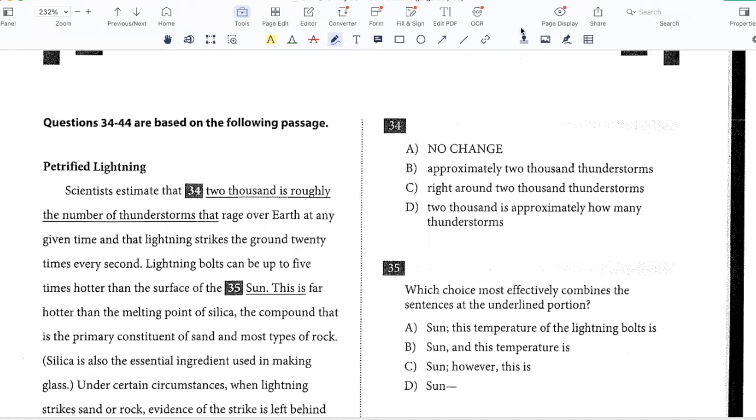Hello students, welcome to the channel. In this video we'll do the fourth and final passage of the May 2017 US SAT's writing section, Petrified Lightning. Scientists estimate that 2,000 is roughly the number of thunderstorms that rage over earth at any given time and that lightning strikes the ground 20 times every second.